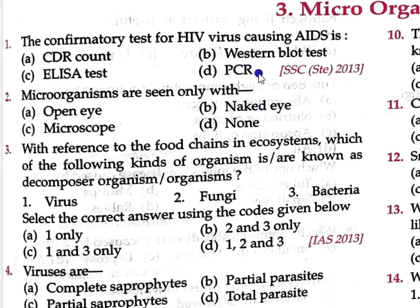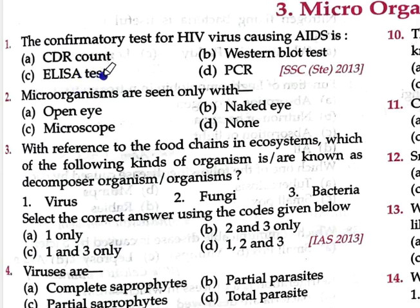PCR stands for Polymerase Chain Reaction. This is an SSC 2013 question. The primary test for HIV diagnosis is ELISA test — when there is a doubt about HIV virus, ELISA test is done first. If it is positive, then we go to Western blot test, which is the confirmatory test that confirms whether HIV virus is present or not. So the correct answer is Option B: Western blot test, not ELISA.